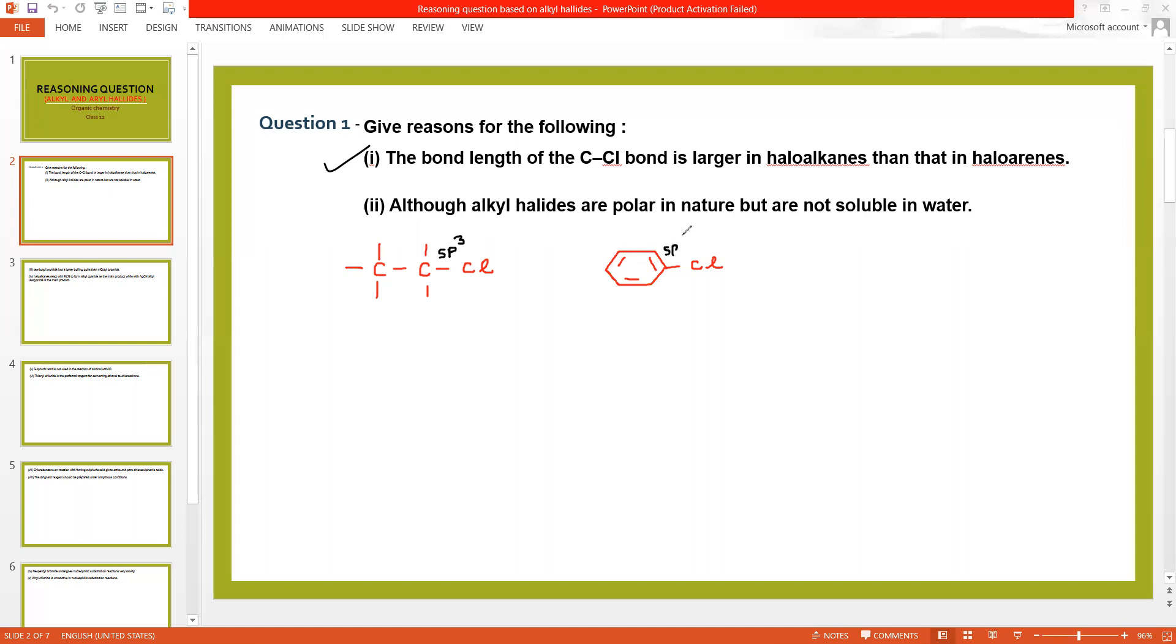The first reason is that in haloalkane carbon-chlorine bond is sp3 hybridized, while bond between chlorine and haloaryl group is sp2 hybridized, it will be shorter. The other reason depends on the resonating structure.